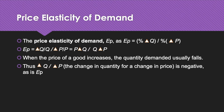The price elasticity of demand measures the sensitivity of quantity demanded to price changes. We write the price elasticity of demand, denoted by Ep, as the ratio of the percentage change in quantity demanded to the percentage change in price. That is, Ep equals %ΔQ divided by %ΔP, where delta represents change.